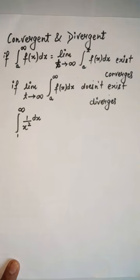When an improper integral is given and we put a limit t tends to infinity and it exists, then it will converge. If it does not exist, it will diverge.